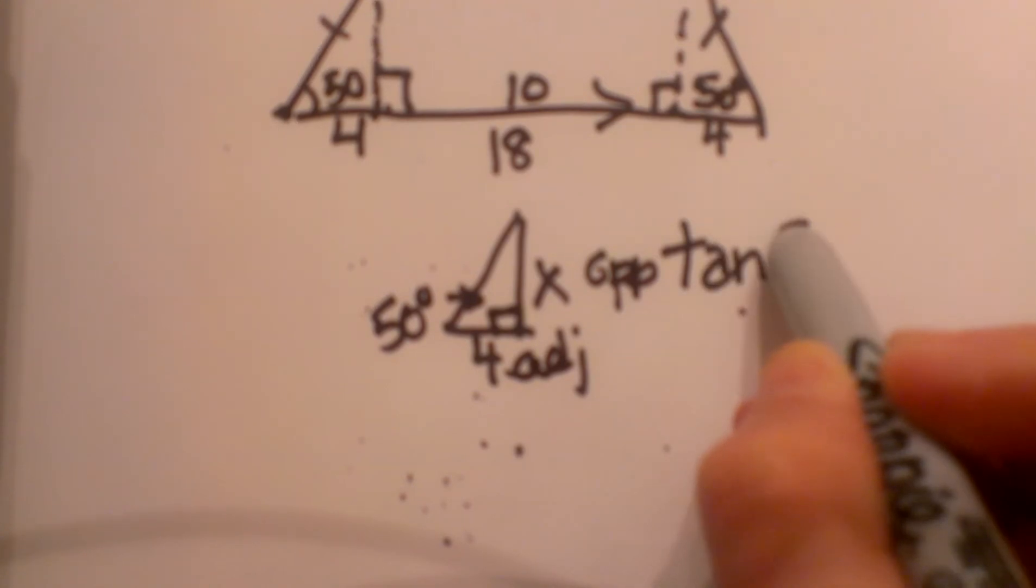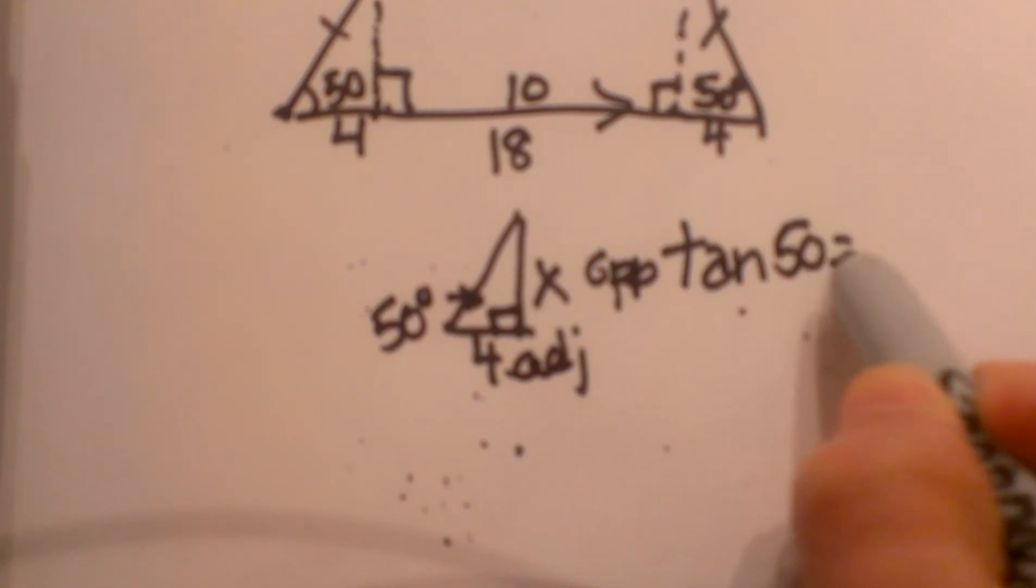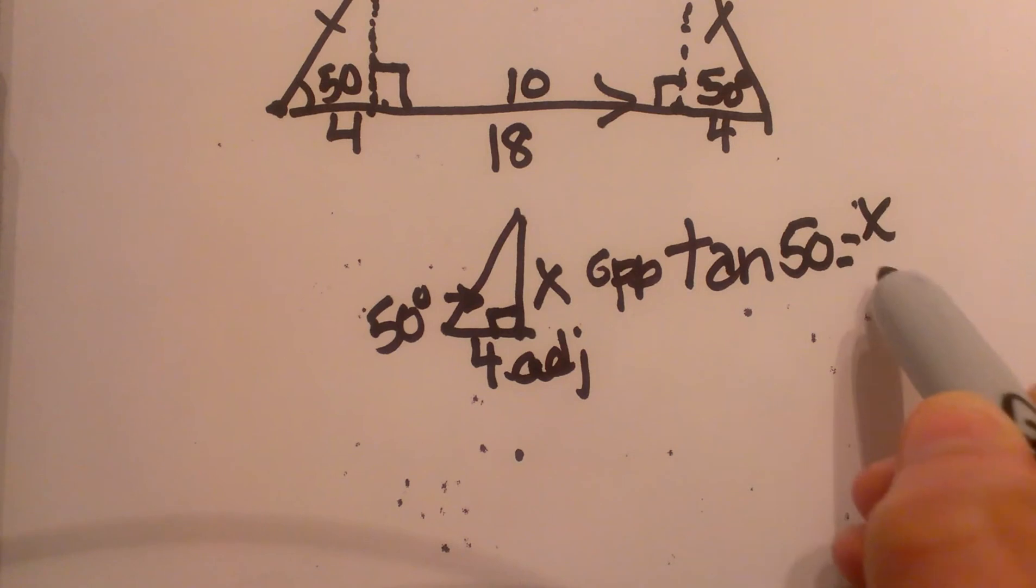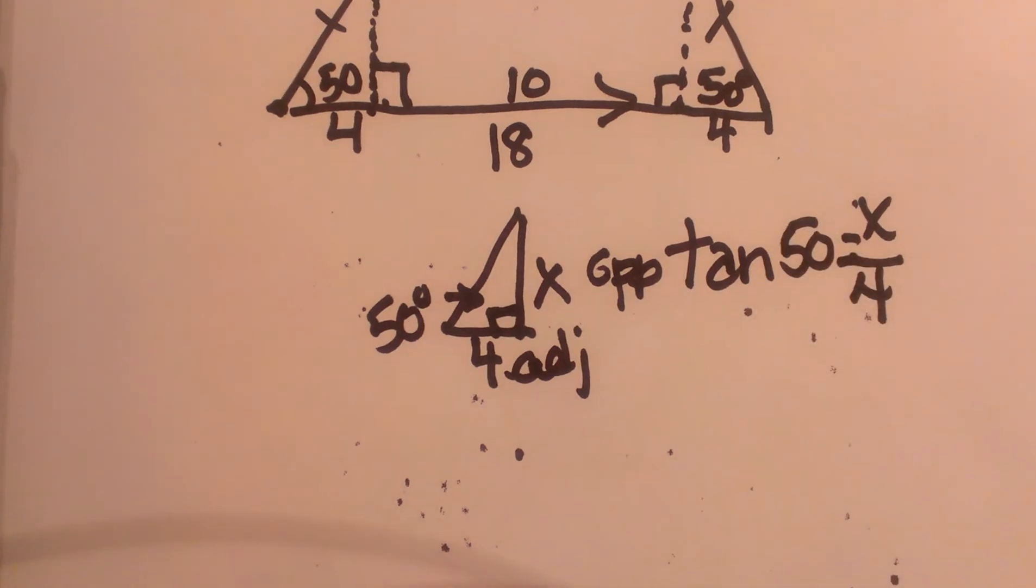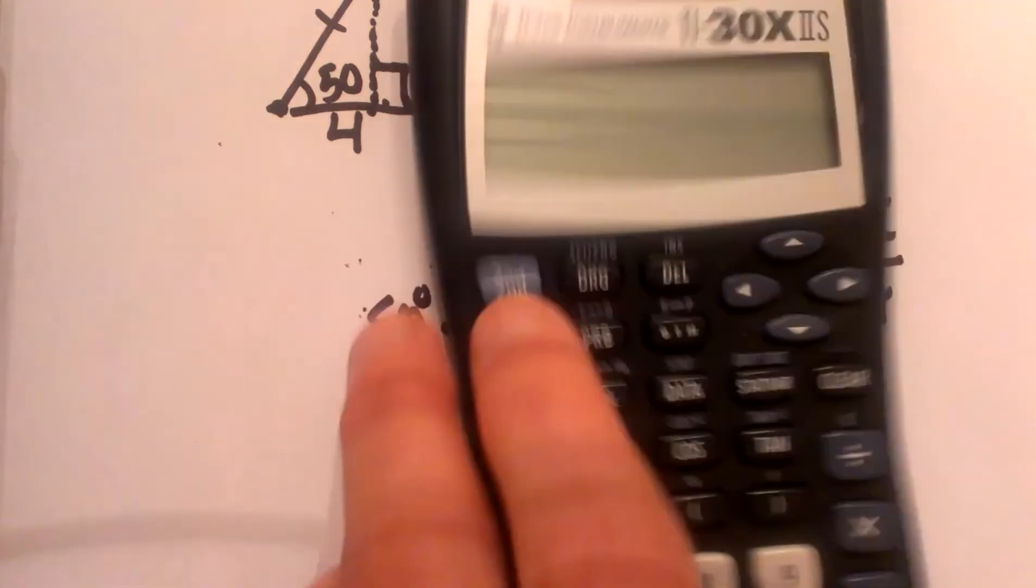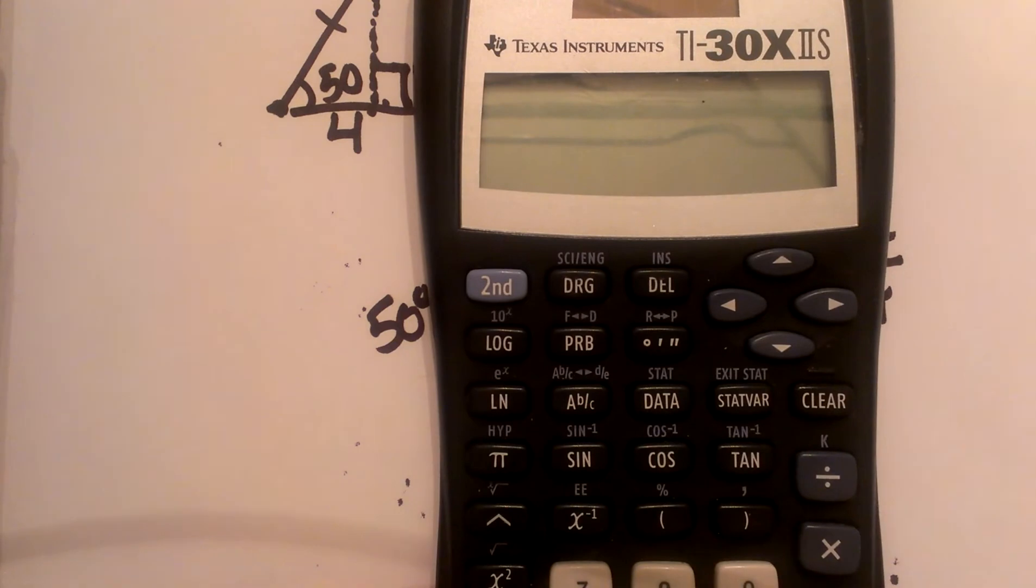So I am going to take the tangent of 50 is equal to opposite over adjacent, so x over 4. Now I am going to convert my tangent of 50 using my calculator. Grab your calculator and take the tangent of 50 degrees.